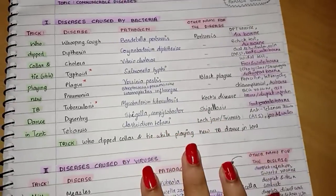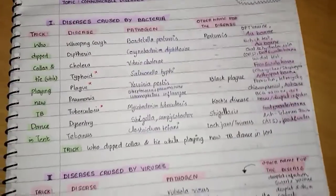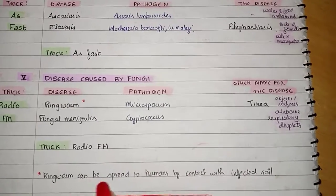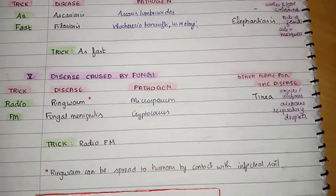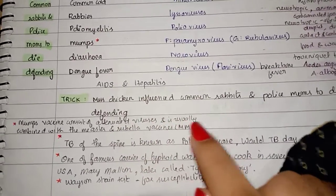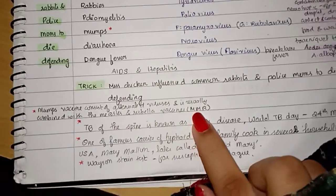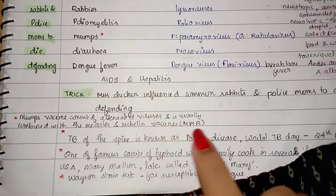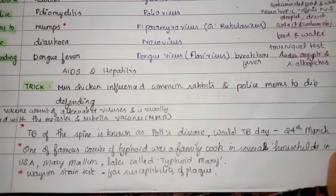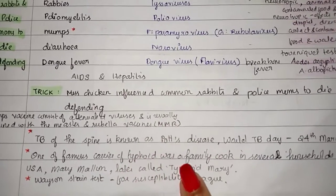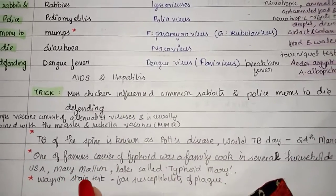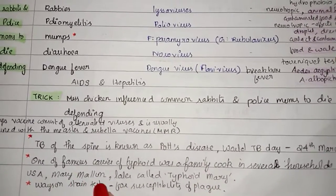That's all about communicable diseases. Some additional points: ringworm can spread by contact with infected soil. The mumps vaccine consists of attenuated viruses and is usually combined with measles and rubella vaccines — called MMR. Tuberculosis of the spine is known as Pott's disease and World Tuberculosis Day is on 24th March. A famous typhoid carrier was Mary Mallon, called Typhoid Mary. Bacot-Martin test is for susceptibility of plague.